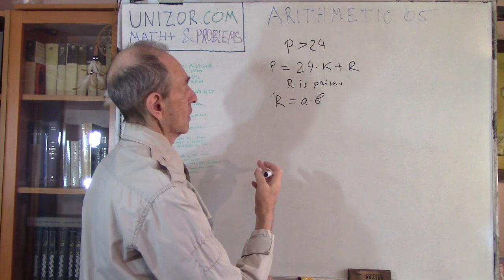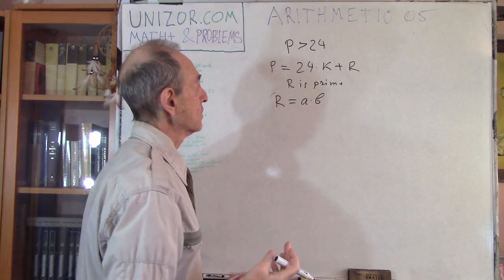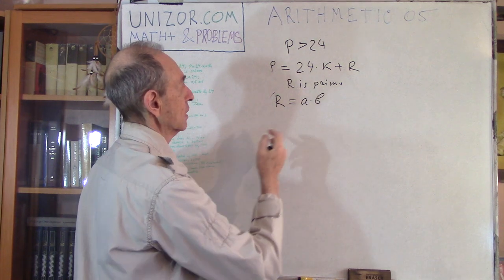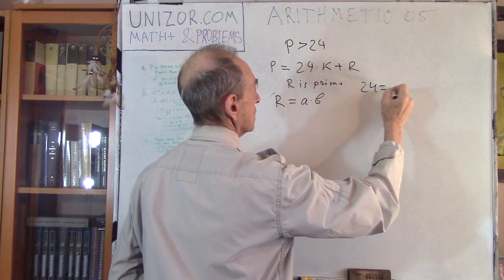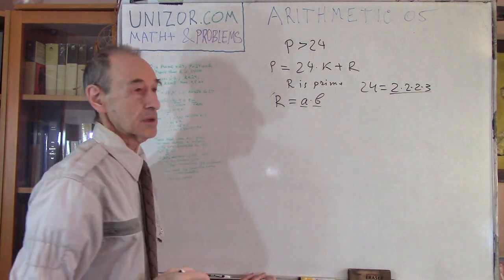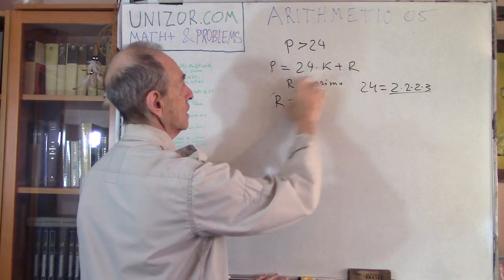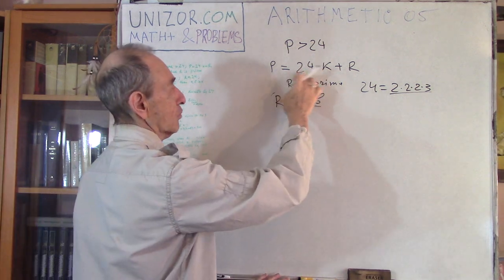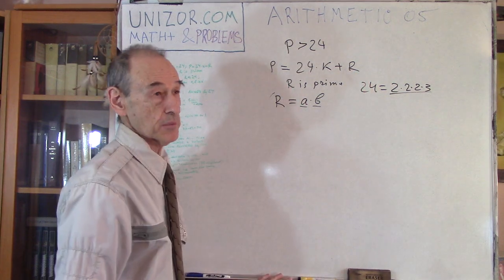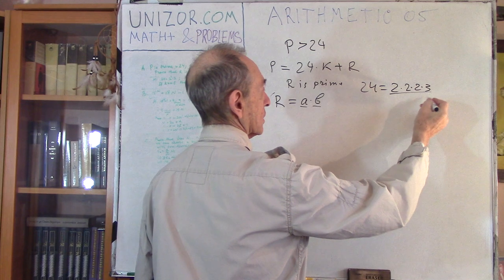What kind of numbers can those be? We need prime numbers into which R is factored. Since 24 is 2 × 2 × 2 × 3, none of these factors can be 2 or 3. Because if a factor is 2 or 3, then P would not be a prime number — since 24 is divisible by 2 and 3, and R is divisible by 2 or 3, P would also be divisible by 2 or 3. So the next prime number is 5.